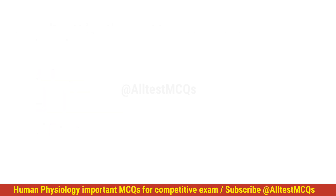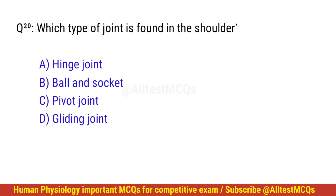Question number 20. Which type of joint is found in the shoulder? The right option is B: Ball and socket.